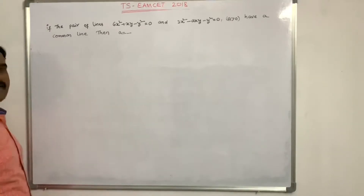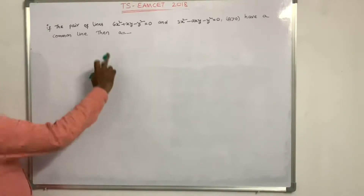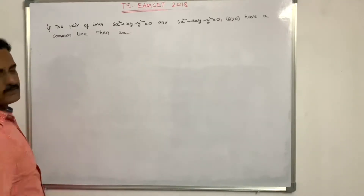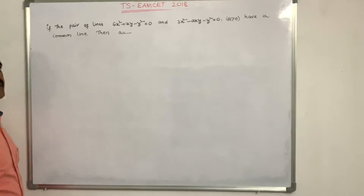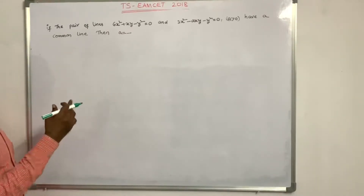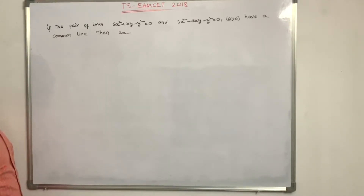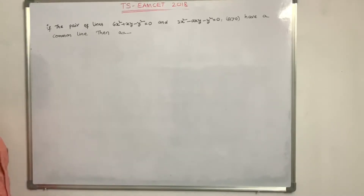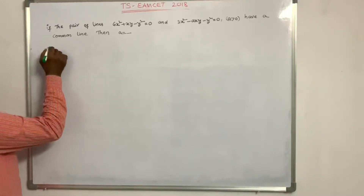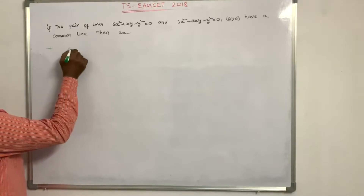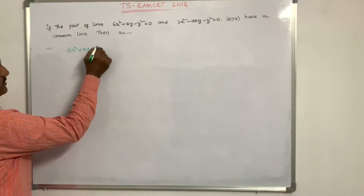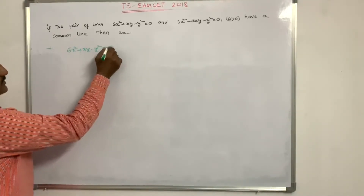If the pair of lines 6x²+xy−y²=0 and 3x²−Axy−y²=0 have a common line, then find A.